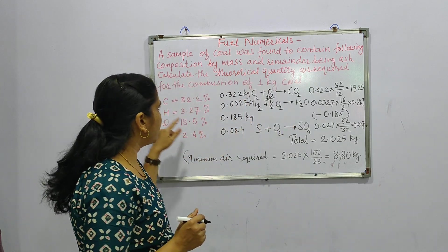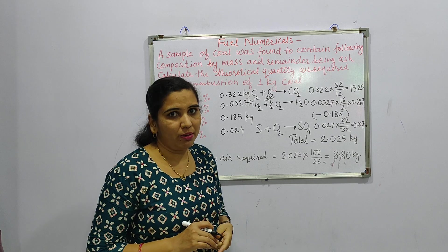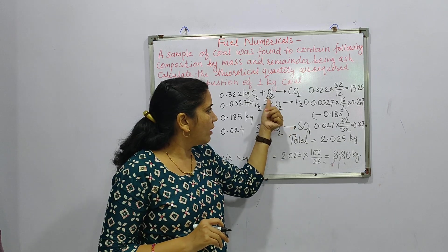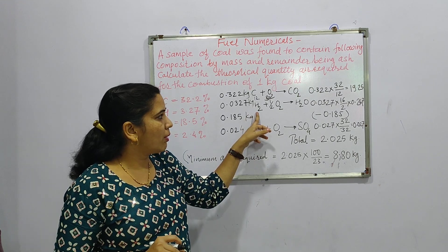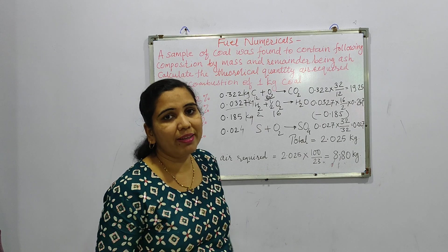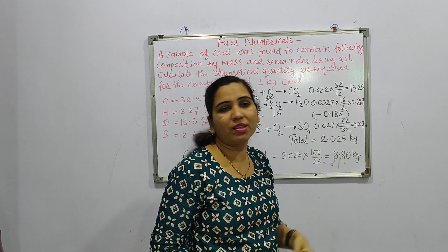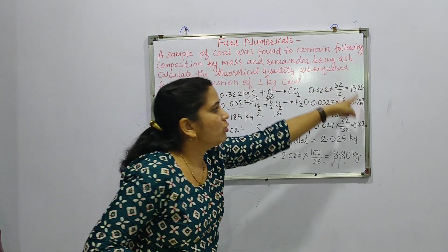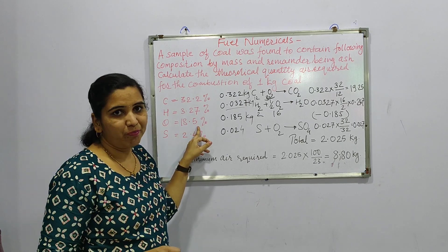For hydrogen: the conversion uses the ratio of 16/2 because 2 kg hydrogen requires 16 kg oxygen. So 0.0327 × 16/2 gives a value of 0.267 kg of oxygen required for hydrogen combustion.